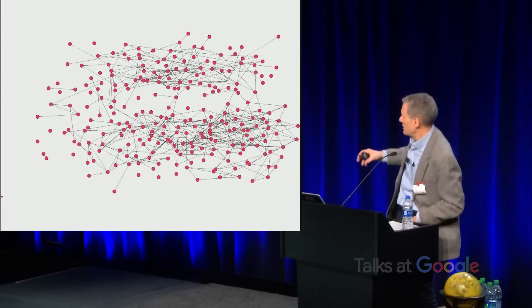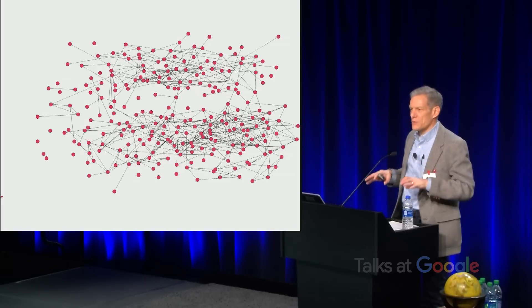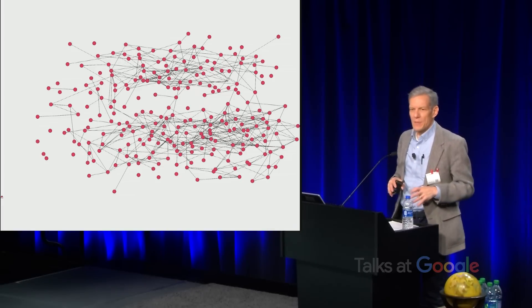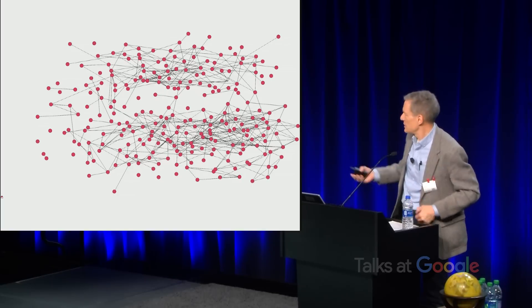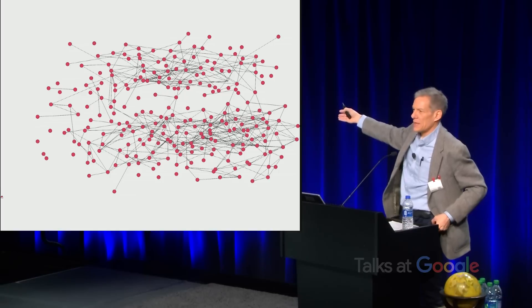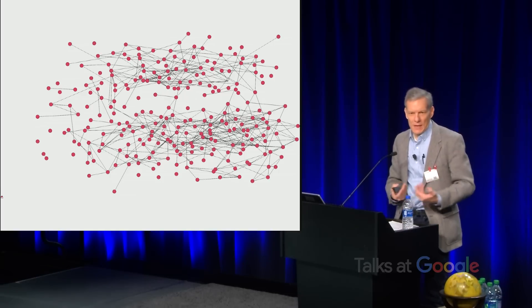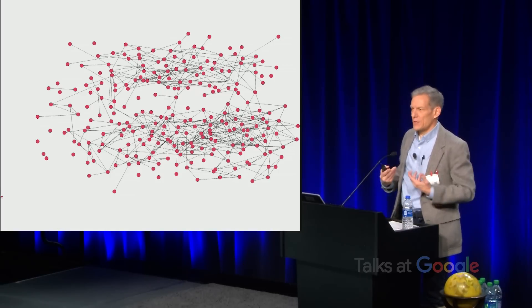Going back to the difference between real networks and random networks: in real networks, some nodes have very many connections and some have very few — what's known as fat tails in the distribution. When you look at the distribution of friendships, you see more people who have very few connections and more people who have very many connections than you would see at random.